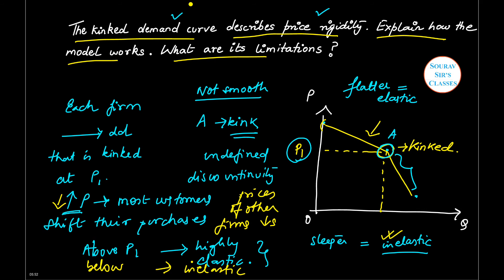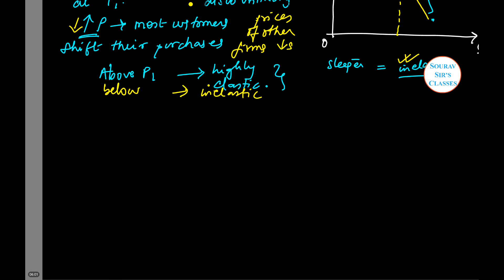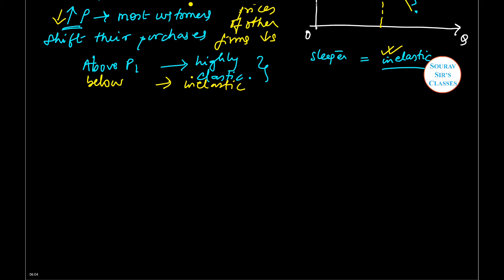Okay, so this kink in demand curve implies a discontinuity in the marginal revenue. So large changes in marginal cost lead to changes in price.